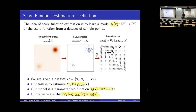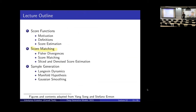So now we have defined the task of score function estimation. How do we actually solve this task? That's going to be the goal of score matching. Score matching is a way of learning a score function, and it does so by optimizing a particular objective.